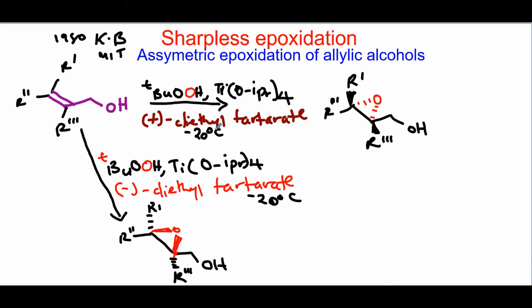So in this case, if you're using the plus stereoisomer of the chiral ligand, you're going to exclusively get an epoxide having the dash or the hatched bond, as you would like to say.